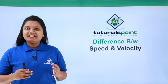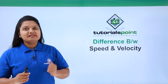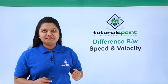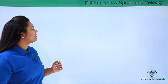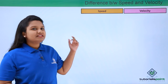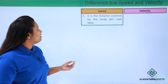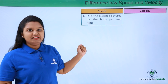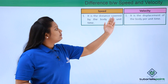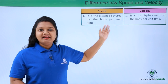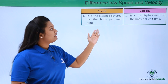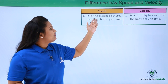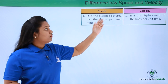In this video we'll be discussing the difference between speed and velocity. Speed is defined as the distance covered by a body per unit time. The velocity of a body is its displacement per unit time.